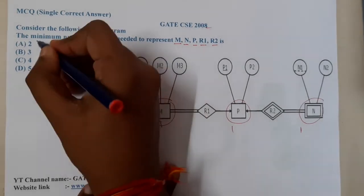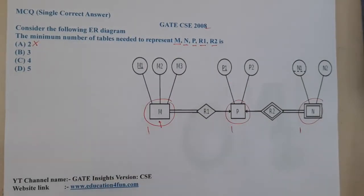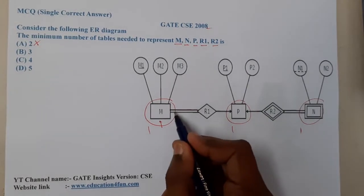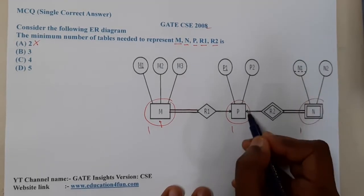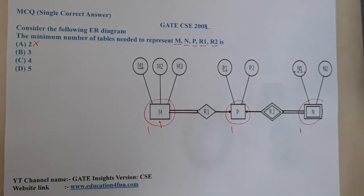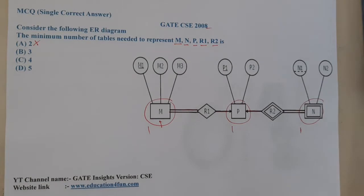Similarly, moving on, he clearly told that this is a total dependency and this is also total dependency, and this is a partial dependency and this is also partial dependency. So indirectly whenever he gave in this way, what we can assume here?